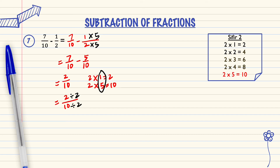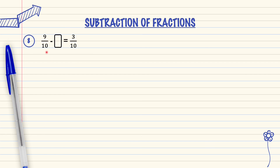The answer is 1 over 5. Question number 8: 9 over 10 minus blank box equals 3 over 10. We will find the fraction in the blank box. Remember, if the box is in the middle, we subtract the numerators 9 and 3.